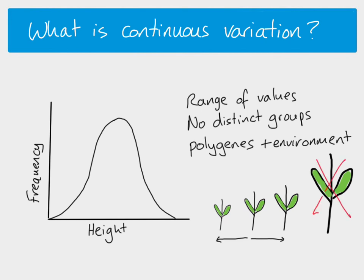The most important takeaway is the idea that polygenes and the environment both combine to determine phenotype, and as a result the phenotype shows continuous variation. Thank you.